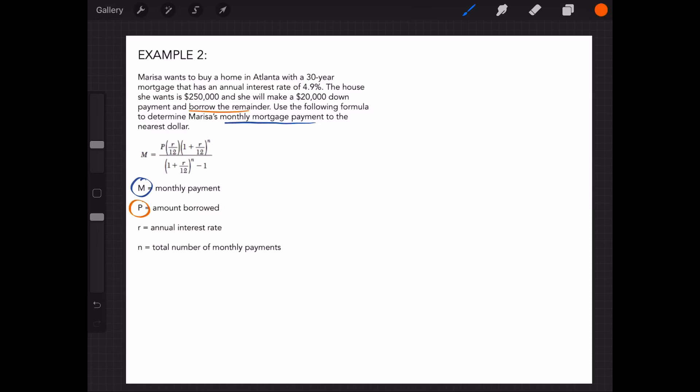P is the amount borrowed. We will need the total price of $250,000 and how much she can pay now, $20,000. Next, we need R, the annual interest rate. We're going to use 4.9%, which, when written as a decimal, is 0.049.